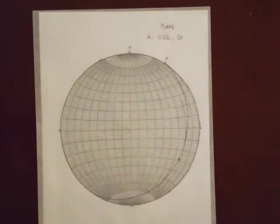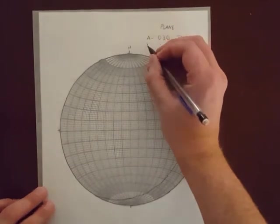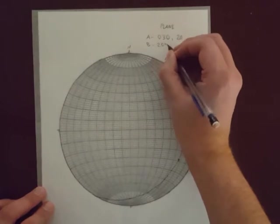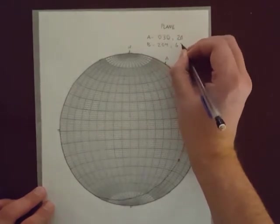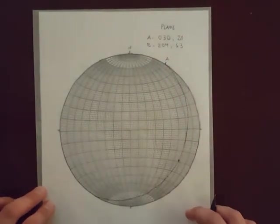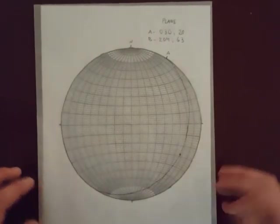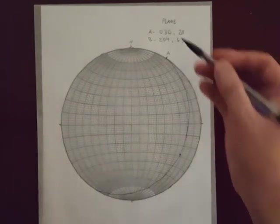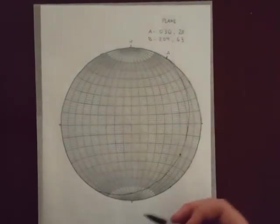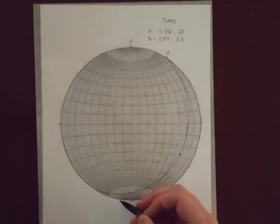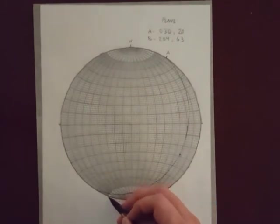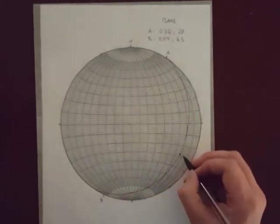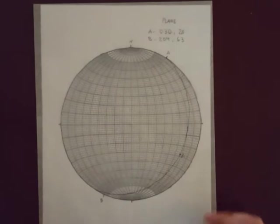Let's plot another plane. Let's plot plane B. And plane B will have a strike of 204, 63. Okay, so again, let's plot strike since strike plots easily somewhere on the great circle. So 204, so 0, 90, 180, 190, 200, 202, 204. There's the strike to plane B. I'll make sure I label plane A as well.